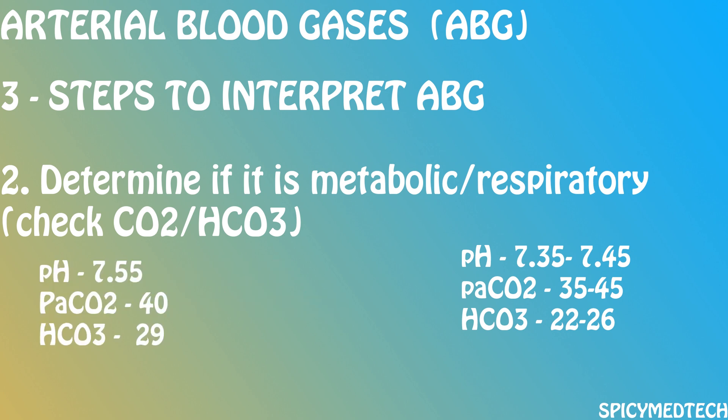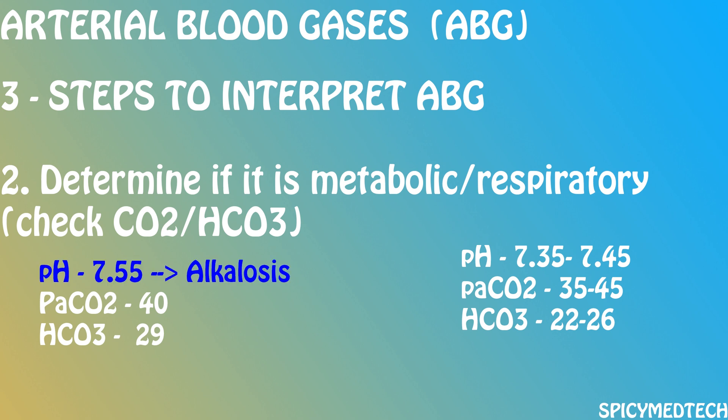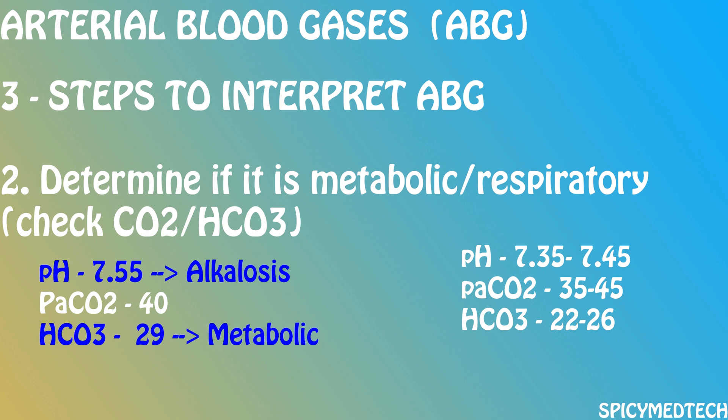Another example: a pH of 7.55, a CO2 of 40, and a bicarbonate of 29. Is it an acidosis or an alkalosis? It is above 7.45, therefore it is an alkalosis. Let's check CO2 — it is normal. How about bicarbonate? It is above the normal range, therefore it is abnormal. So we can call this a metabolic alkalosis.